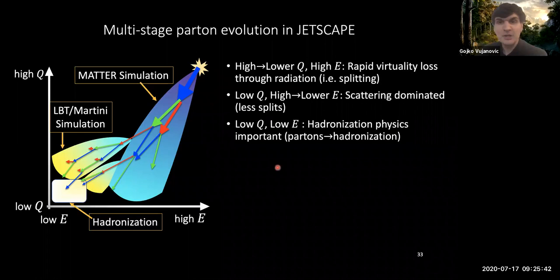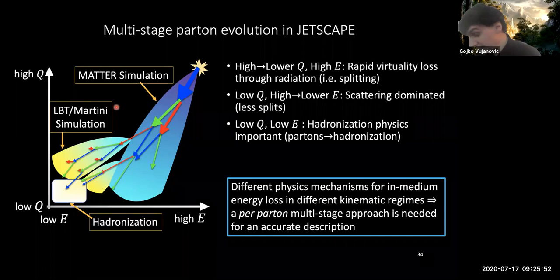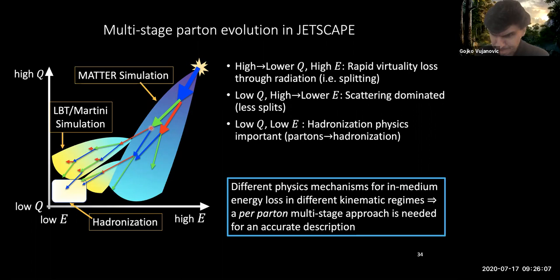So once you're done with the evolution of matter and LBT Martini, which I will talk about a little bit later, you essentially hand over those partons onto Pythia. Now the key advantage of the JETSCAPE framework is that it actually allows for these different physics mechanisms, so the evolution of high virtuality and the evolution of low virtuality, to actually talk to one another. And really the JETSCAPE framework keeps track of all the partons present in the shower on a parton by parton level.